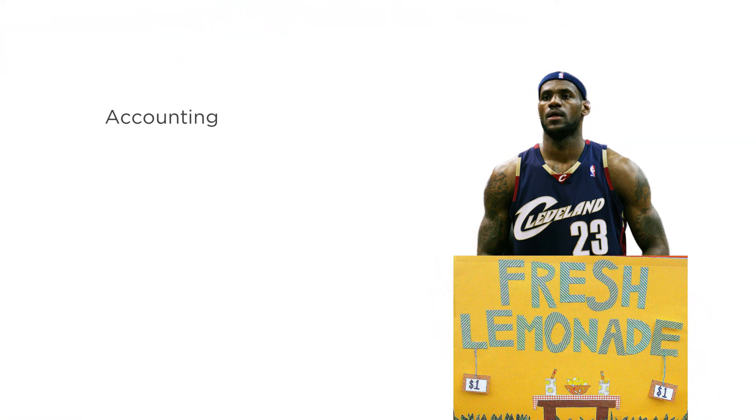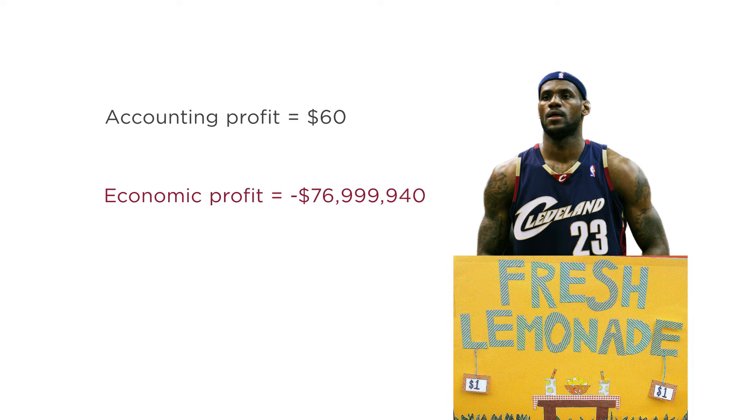This lecture, we briefly discussed accounting profits and economic profits. We used the example of LeBron James retiring from basketball and opening a lemonade stand. Even if the lemonade stand makes him a few bucks, it's probably a terrible idea. The accounting profit is positive — that's the few dollars he makes from selling lemonade. But the economic profit is enormously negative, because it takes into account the money he's not making by forgoing basketball to mix lemonade.